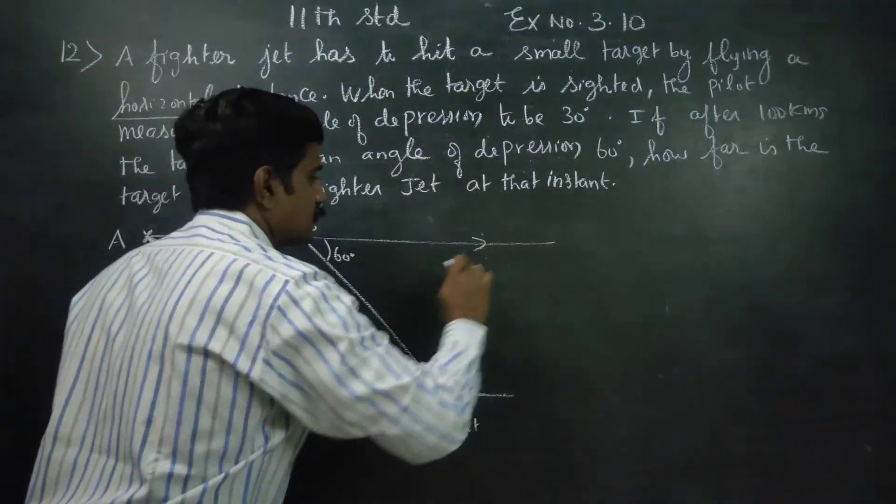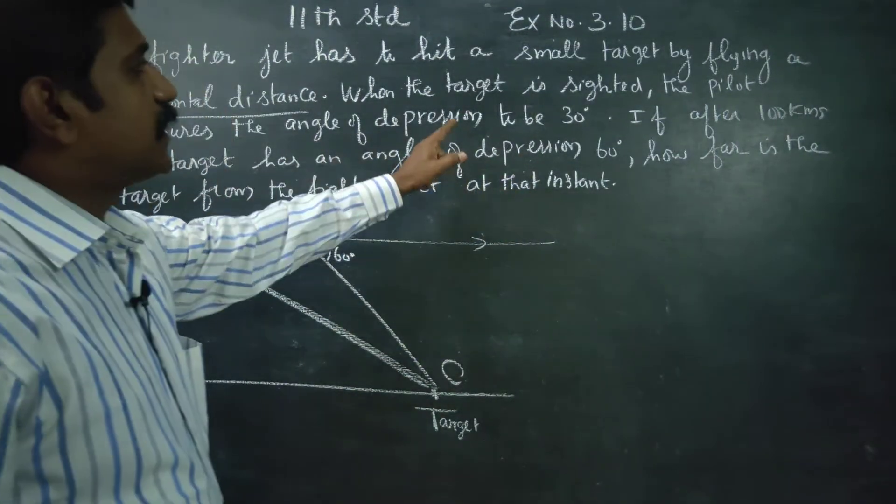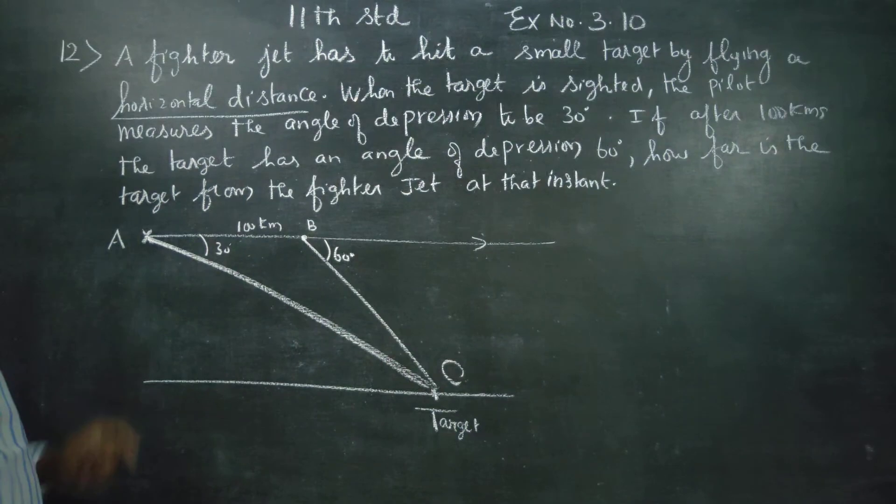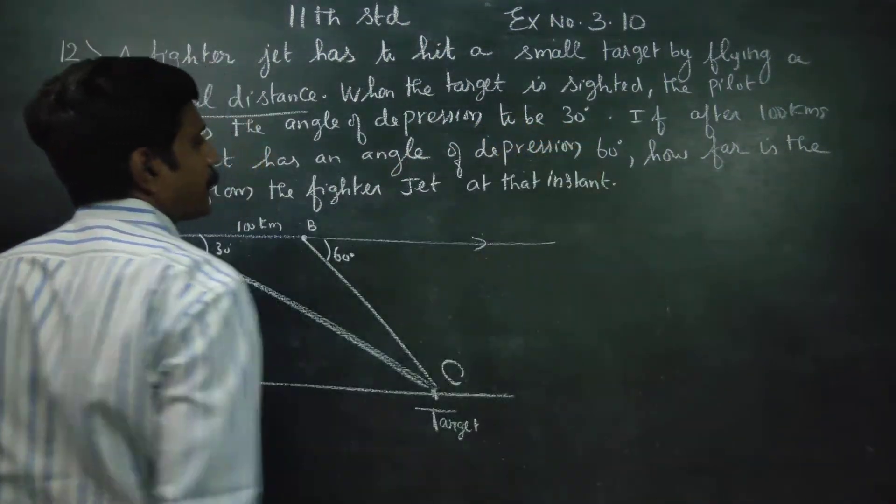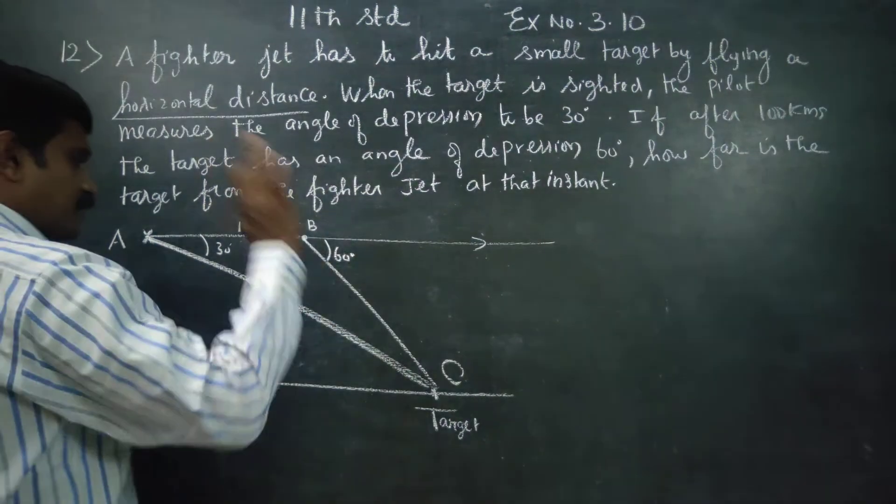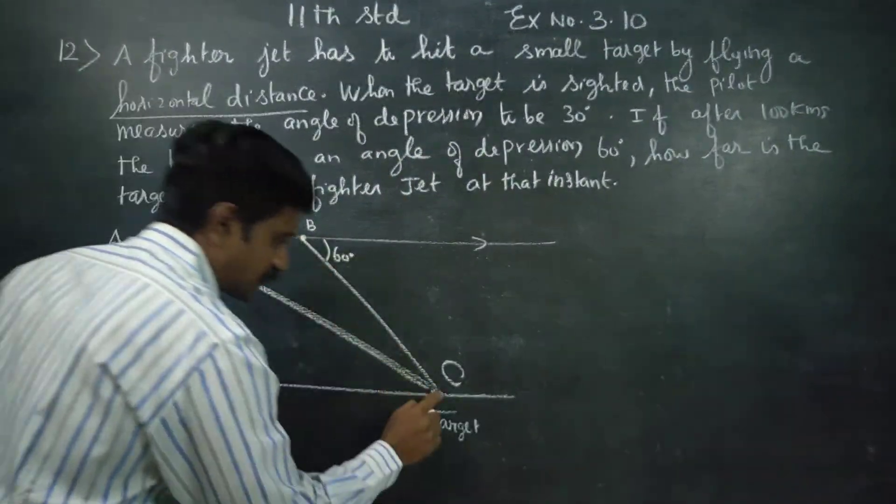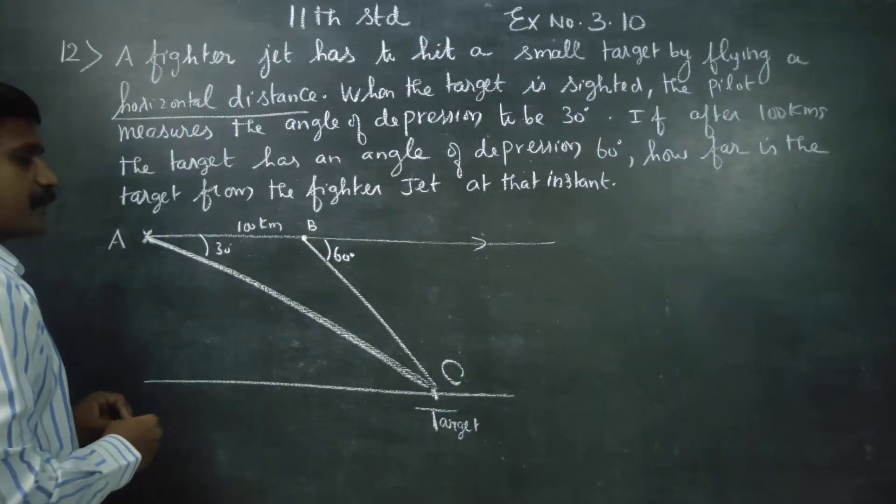This horizontal distance is a straight line. When the target is sighted, the pilot measures the angle of depression to be 30 degrees. After 100 kilometers, the angle of depression is 60 degrees. I am going to draw the diagram.